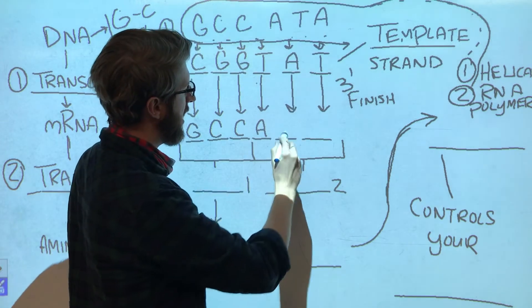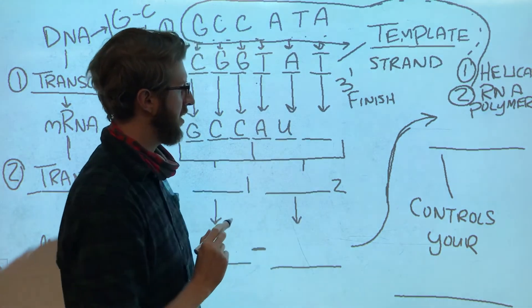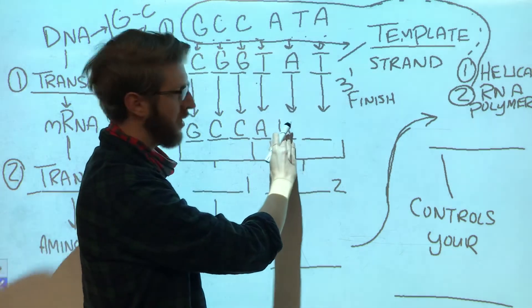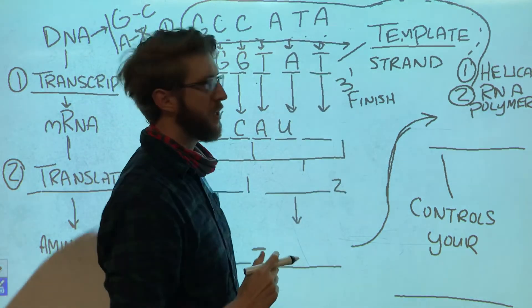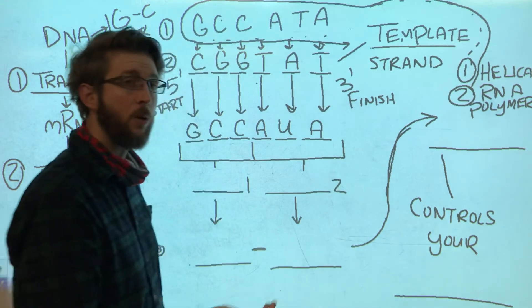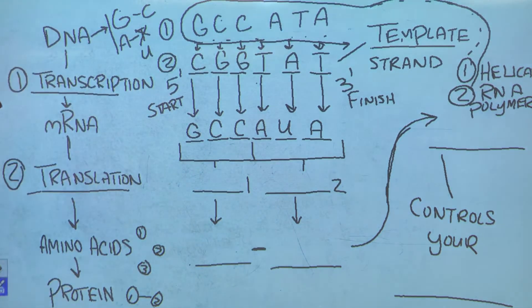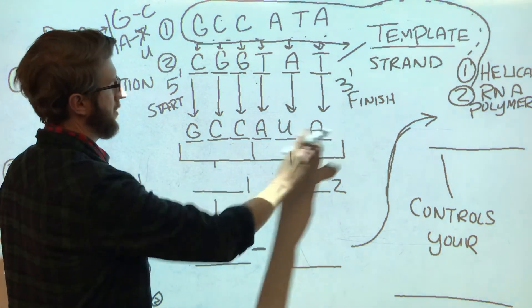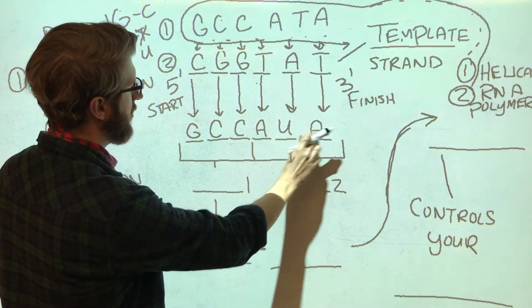So instead of putting a T, I'm going to put a U. And where T is, I'm going to put an A just like normal. So now we have a strand of RNA. Here it is: GCCAUA.